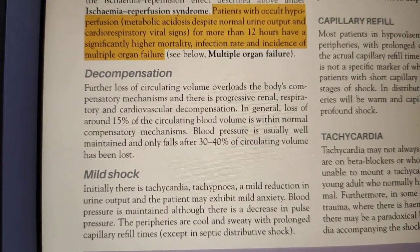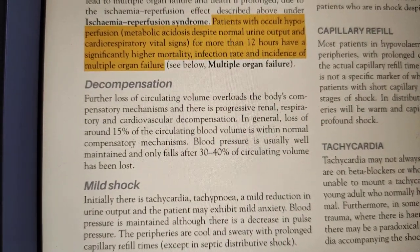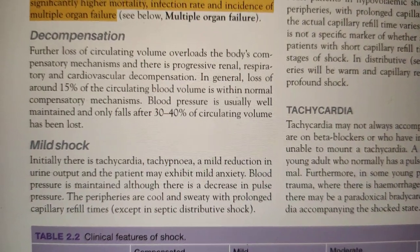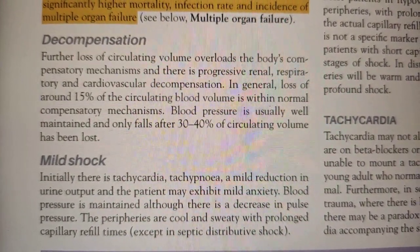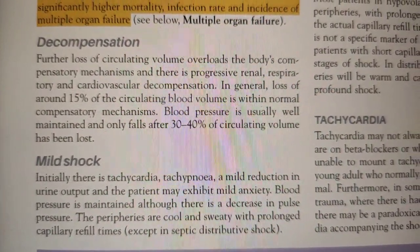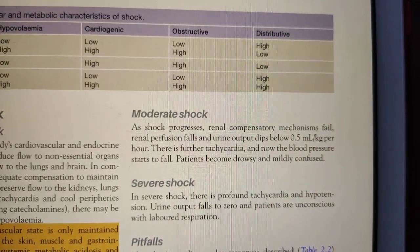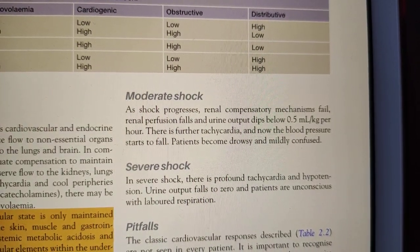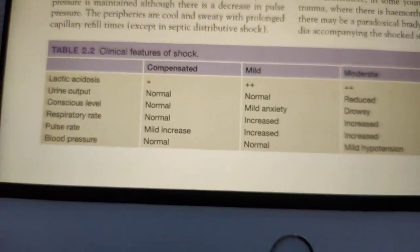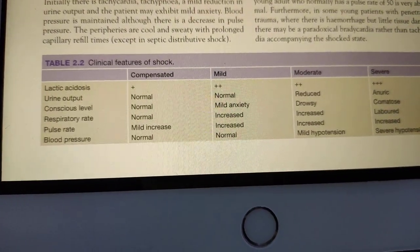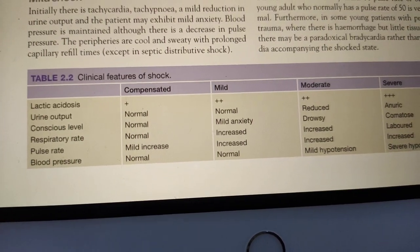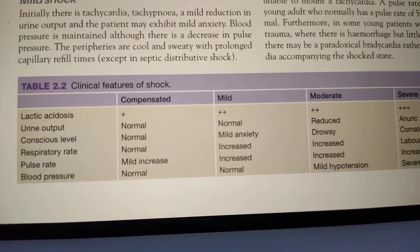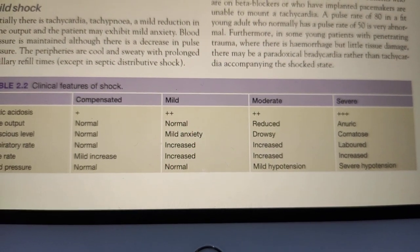Decompensated shock occurs when more than 30 to 40 percent blood loss occurs and the body cannot cope; administering fluids at that stage may be useless. Grading is mild, moderate, and severe. In mild shock there is tachycardia and tachypnea with slightly decreased urine output and anxiety. In moderate shock, urine output decreases and blood pressure falls slightly. In severe shock the patient is comatose with labored respiration, no urine output, and profound hypotension. Lactic acidosis is present in all grades but increases progressively.